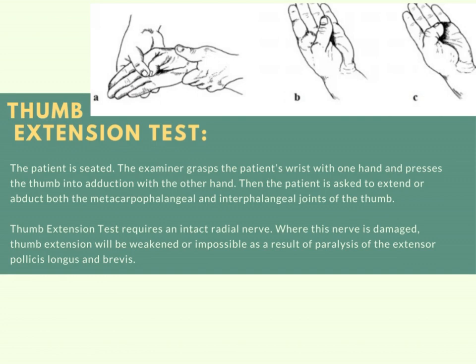For the thumb extension test, the patient is seated. The examiner grasps the patient's wrist with one hand and presses the thumb into adduction with the other hand, as seen in part A. The patient is then asked to extend or abduct both the metacarpophalangeal and interphalangeal joints of the thumb, as seen in part B. This test requires an intact radial nerve; when damaged, thumb extension will be weakened or impossible due to paralysis of extensor pollicis longus and brevis.